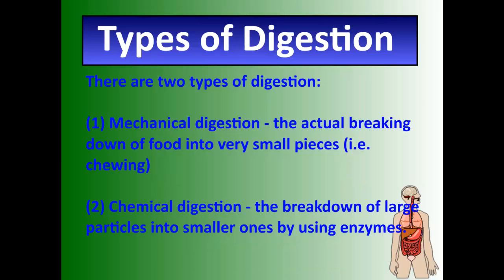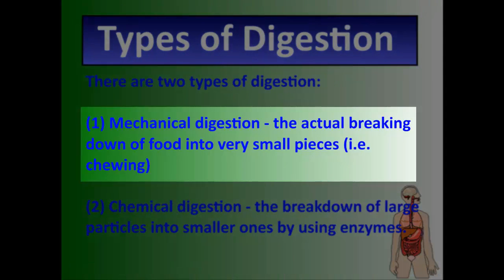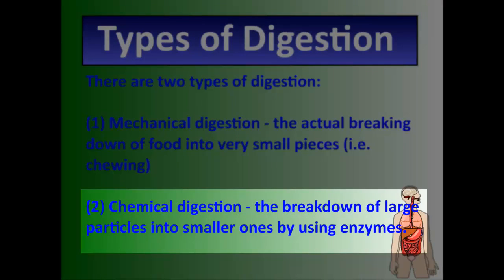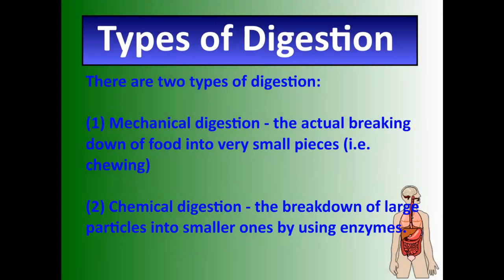There are actually two types of digestion. There's mechanical digestion, which is actual chewing — breaking your food into small pieces. And there's something called chemical digestion, which is what happens when enzymes in your saliva or stomach begin to break things down at the microscopic level, into tiny proteins and minerals. But first, in your mouth, there's the physical breaking down of food into smaller pieces.